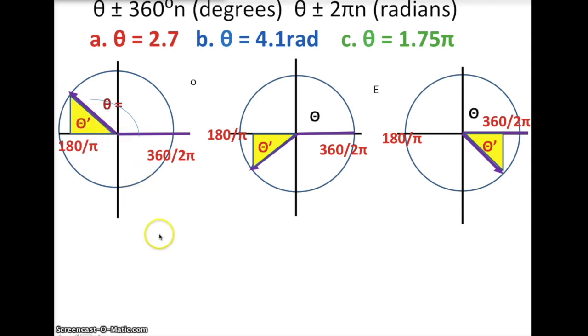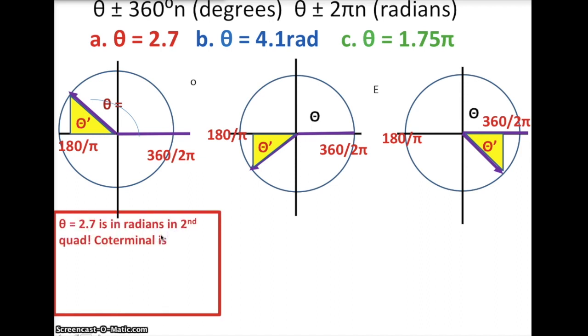So we would want to add, since I'm in radians, we would want to add 2π, which would give us 8.9832, or subtract 2π, which would give you negative 3.5832 radians.